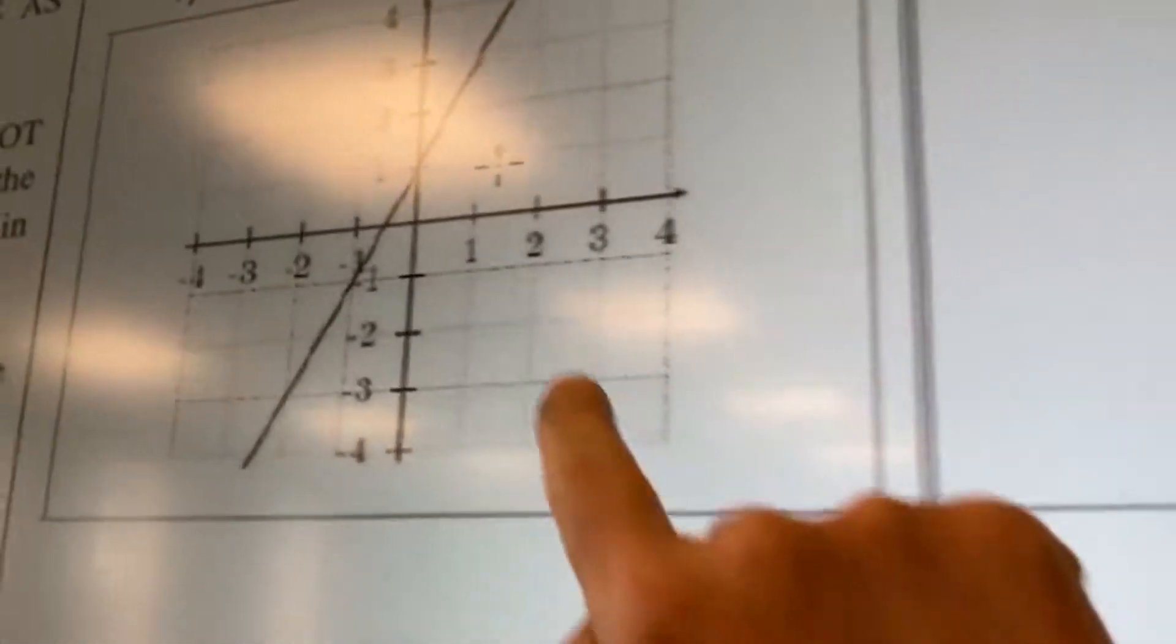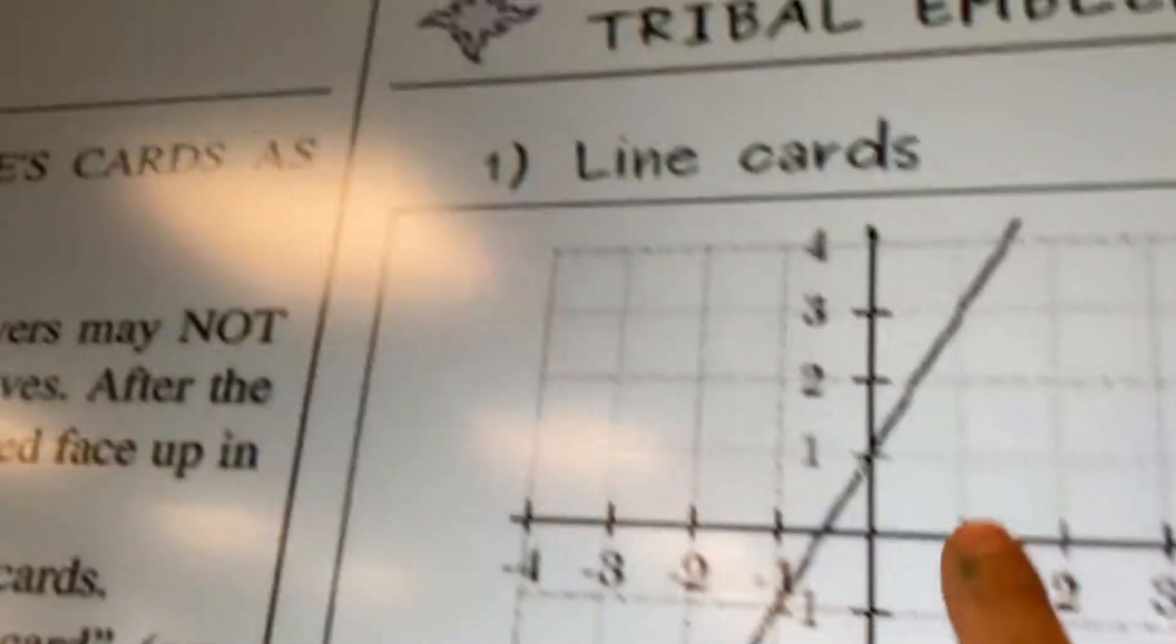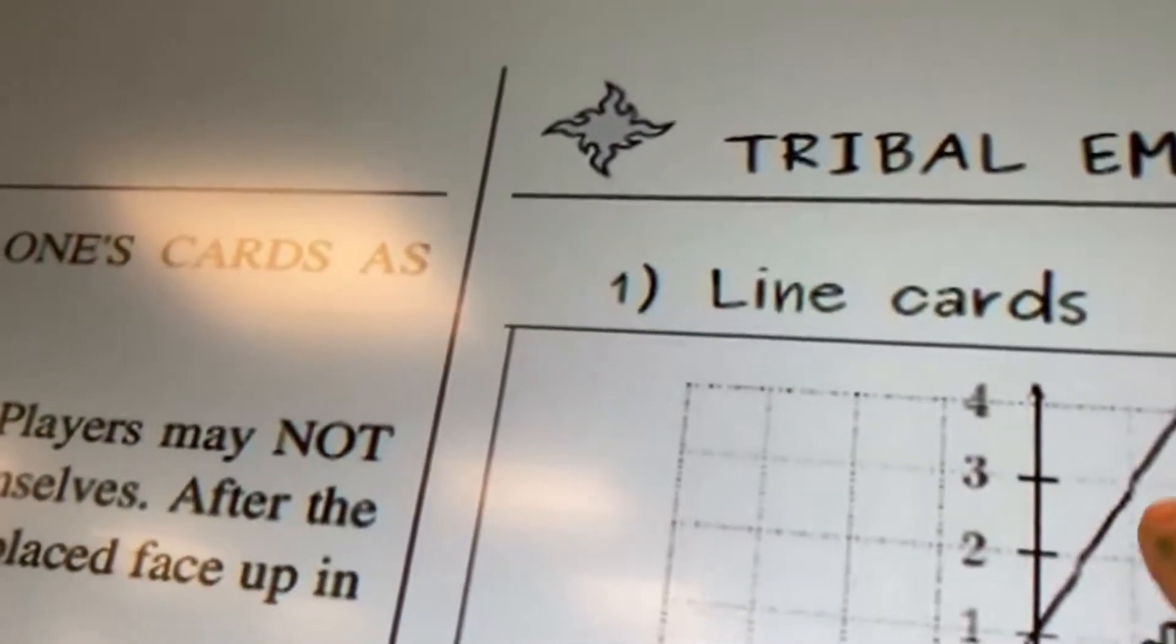Okay, the intercept is 1, and the slope, you can read it here, is 2.